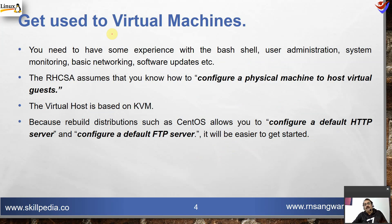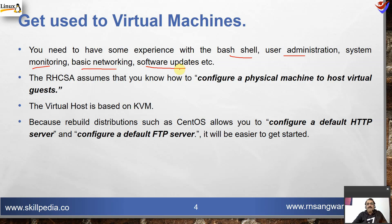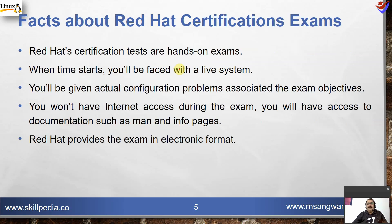Get used to virtual machines if you have not worked with them. You need experience with bash shell, user administration, system monitoring, basic networking, and software updates. The RHCSA assumes you know how to configure a physical machine to host virtual guests. The virtual host machine is based on KVM — kernel virtualization modules — because rebuild distributions such as CentOS allow you to configure a default HTTP server and default FTP server.